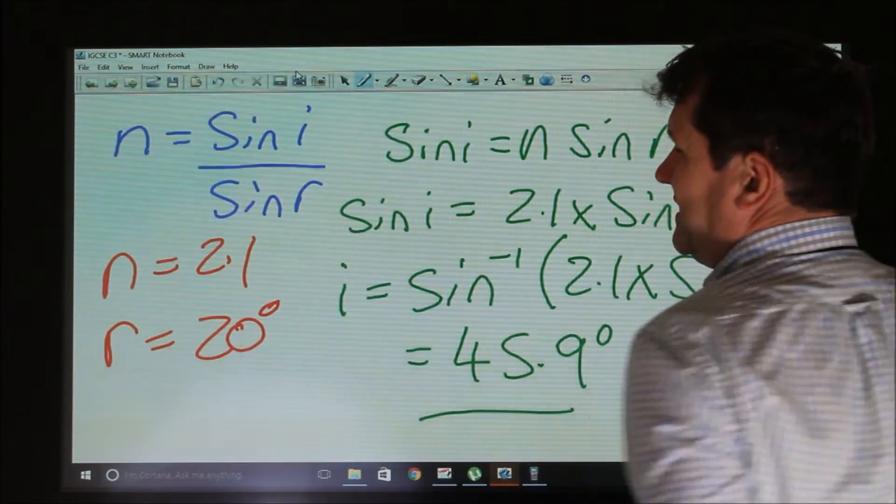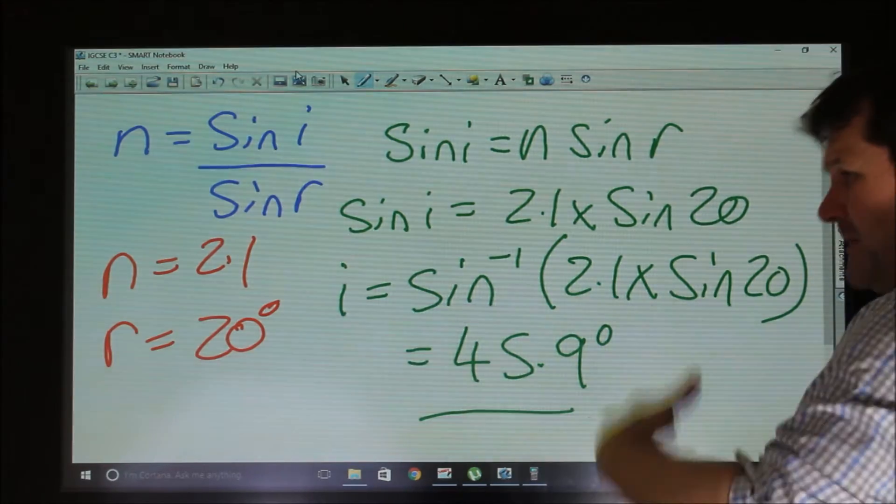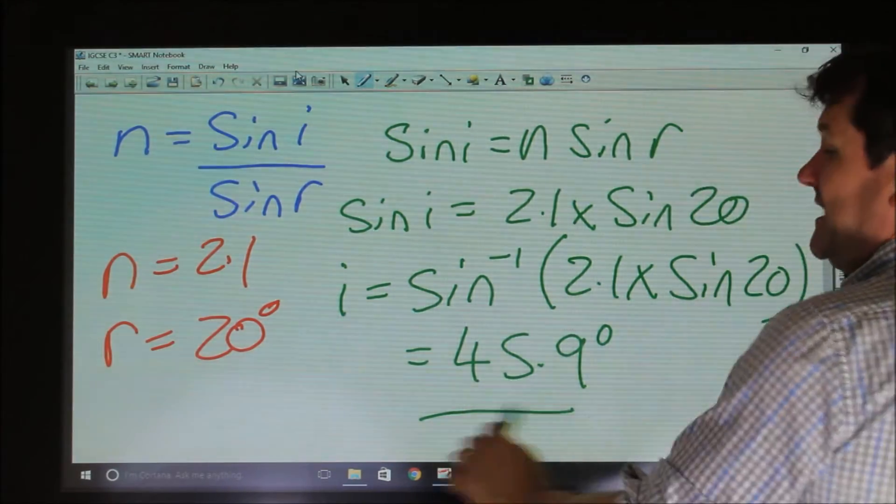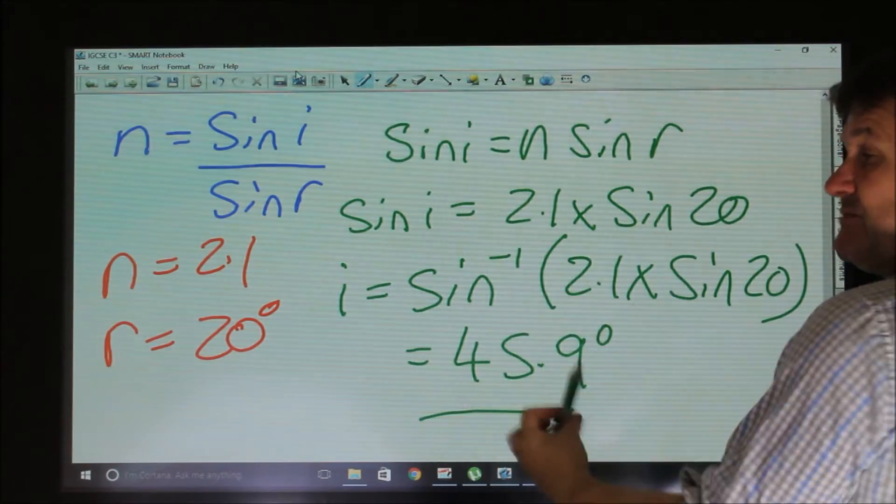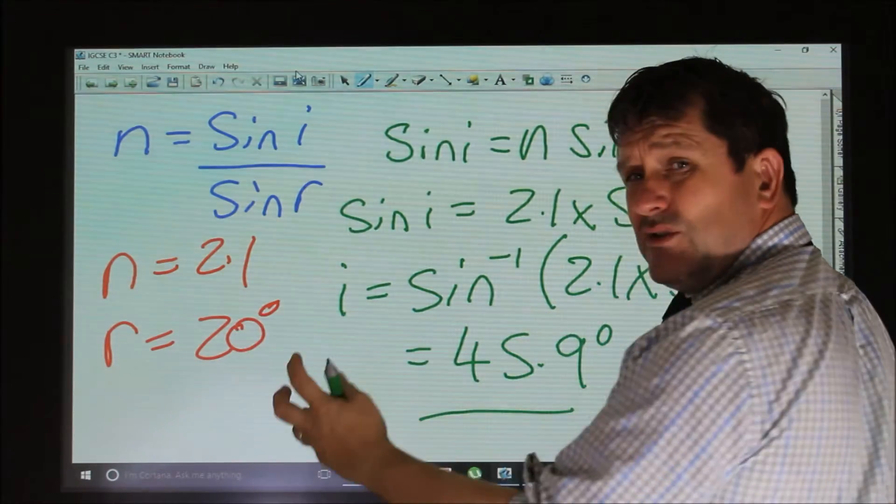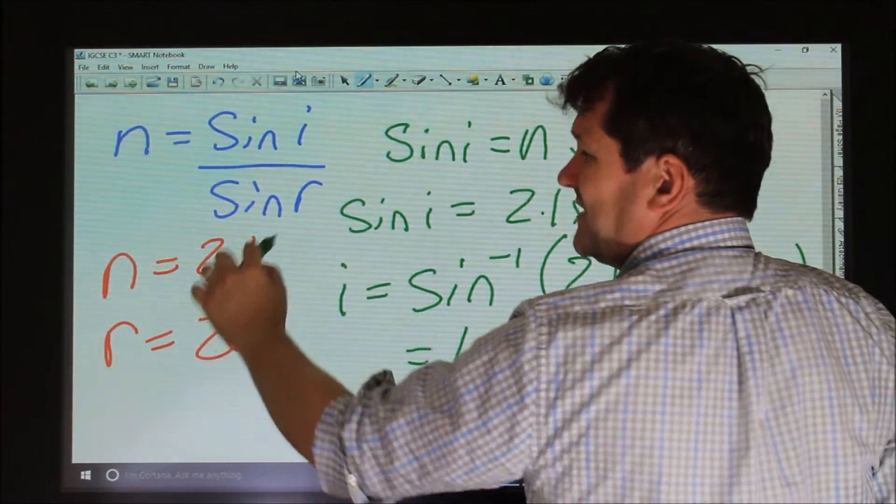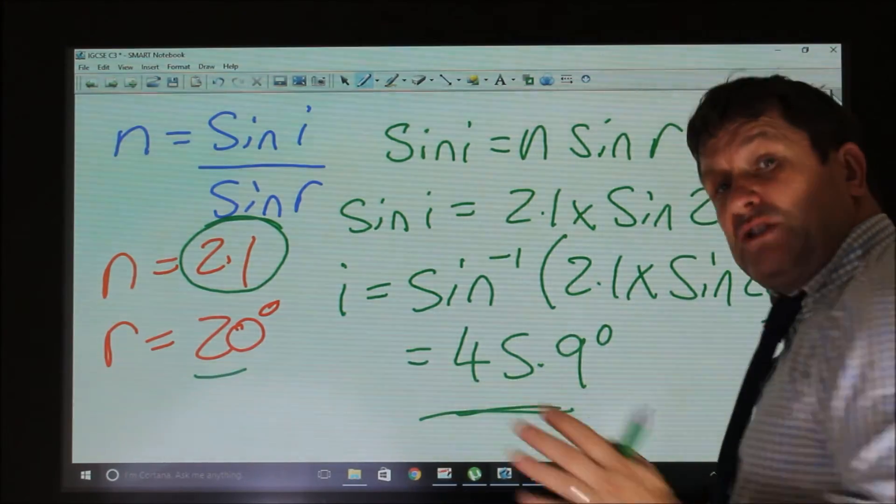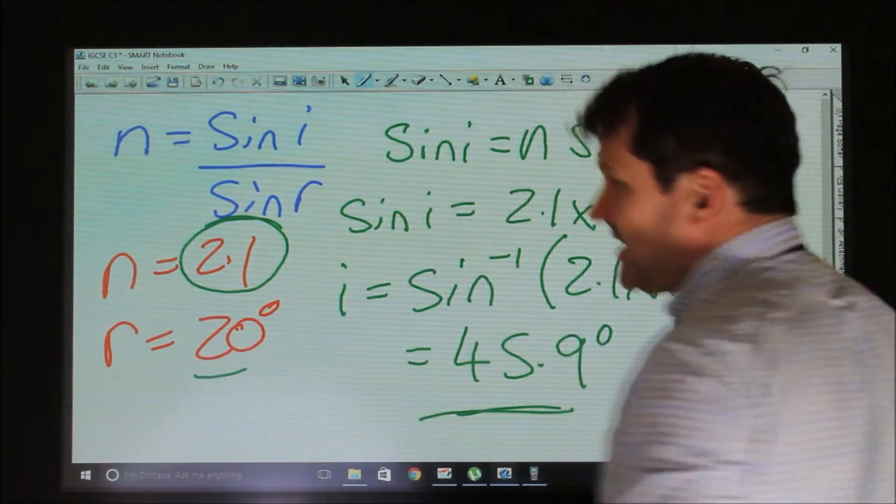And at the end of every answer, I always look at every answer and think, does that make sense? Is it realistic? And if you look at this, that is realistic because you would expect the incident angle to be bigger than the refractive angle. And also, given that the refractive index is so large, we can see why we've got such a change in direction.